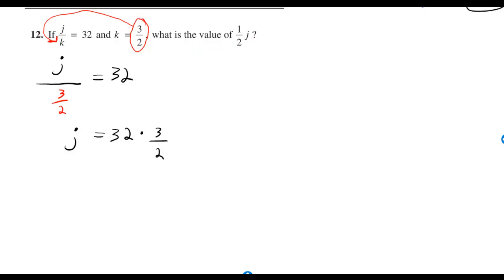You can first substitute the 3 halves where you see the k. And then instead of j over k, we can write j over 3 halves is equal to 32.